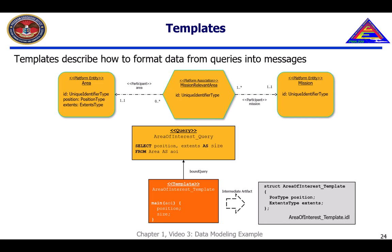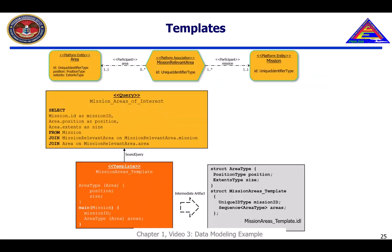The FACE conformance test suite uses this information to create an intermediate IDL artifact that is later translated into a language-specific header representing the message format. This is a template to format all areas of interest for a mission into a message struct. It first specifies that the position and size extents from area should be combined into the same structure, then indicates that the mission ID is to be combined into a struct that also contains a series of the area type structs.